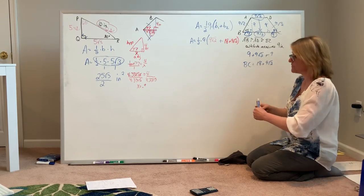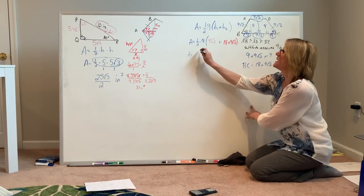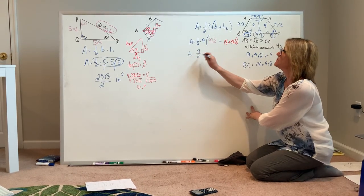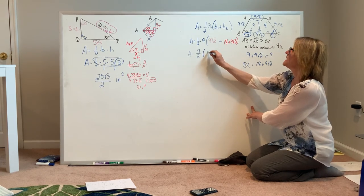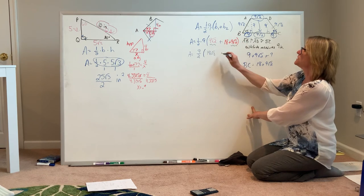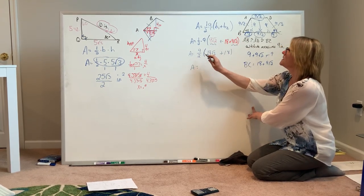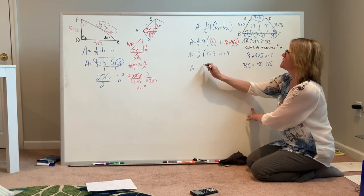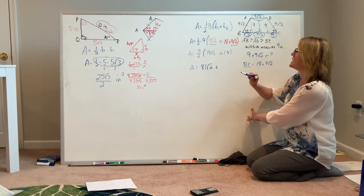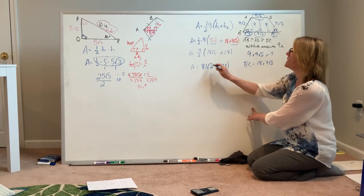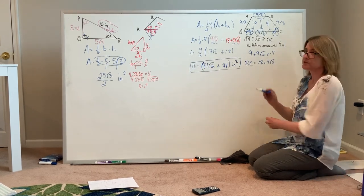Now it's just a matter of going through the algebra involved to simplify. I'm thinking one half times 9 is 9 halves, and I'm multiplying that by the quantity 18 square root of 2, combining my two like terms, plus 18. 9 halves times 18 square root of 2 gives me 81 square root of 2, and 9 halves times 18 gives me 81. What I'm calculating is how many little square inches will cover up that trapezoid.